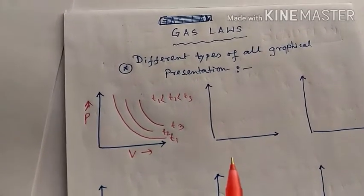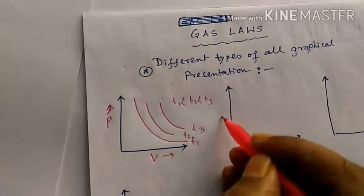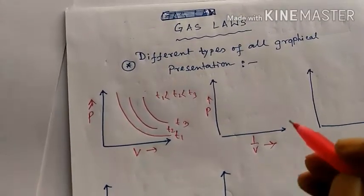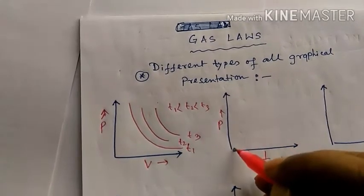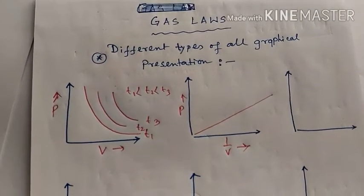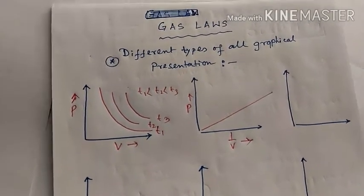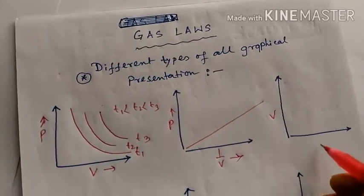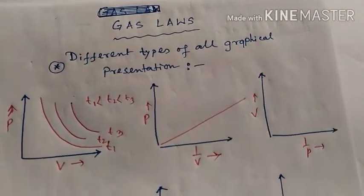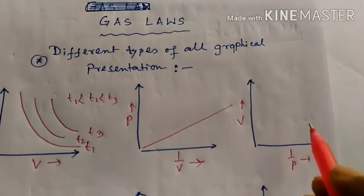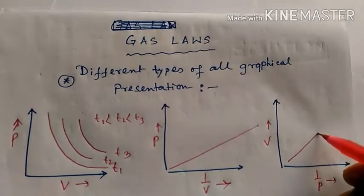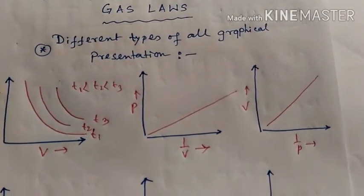Now we are moving to the P versus 1/V graph. This graph looks like a straight line passing through the origin. Next is the V versus 1/P graph, which gives a very similar, slightly steeper straight-line graph.